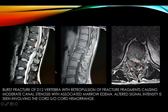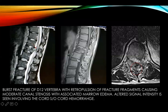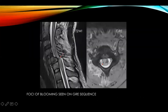This case shows a burst fracture of the D12 vertebra with retropulsion of the fracture fragment causing moderate canal stenosis, clearly visible on the axial image. There is associated marrow edema and a heterogeneous signal intensity within the cord on T2 — hypointensity surrounded by hyperintensity — which is suggestive of cord hemorrhage.